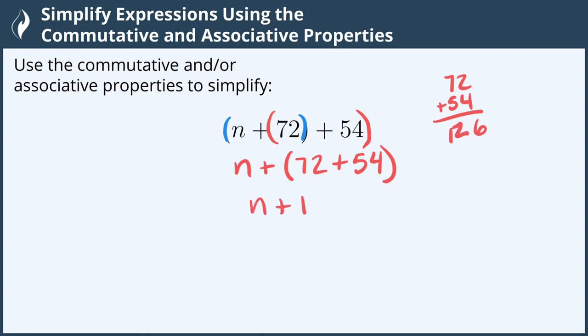So we have n plus 126, and that's our answer. We were able to simplify by using the associative property. And we're all done!